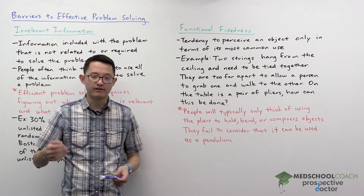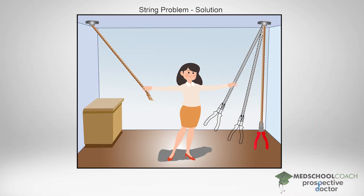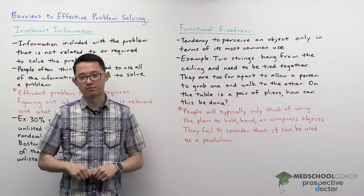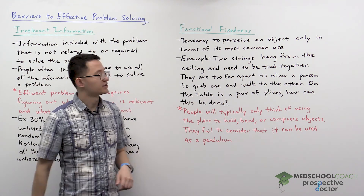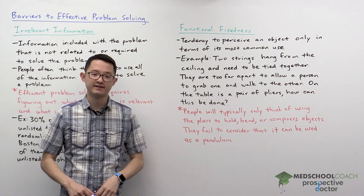However, if you take a look at the solution in this diagram, you'll see what they're missing. Pliers can be used to hold, bend, or compress objects, but that's not the only way you can use them. You can, for example, connect the plier as a pendulum, swing the pendulum back and forth so that as you're holding one string, you're able to grab the other string. That's the solution to this problem and a good demonstration of what functional fixedness is.